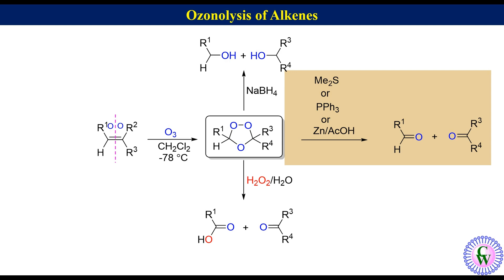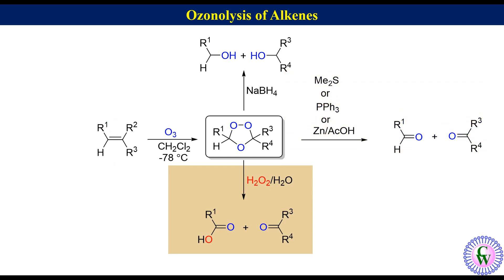To draw the product formed by the reaction of ozonide with aqueous hydrogen peroxide: break the molecule into two parts from the middle of the C-C double bond, connect the double bond of each fragment with oxygen, and replace the hydrogen of the alkene with OH.